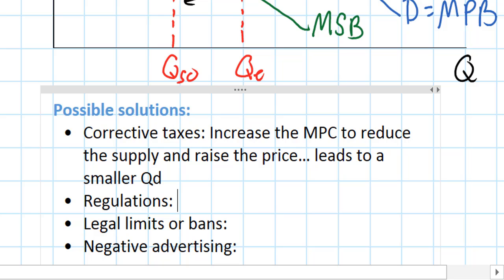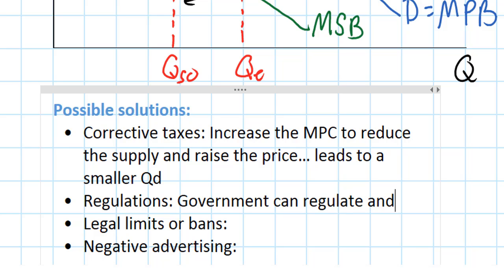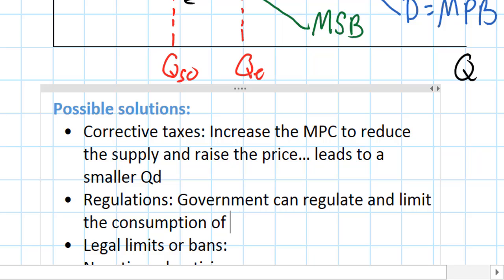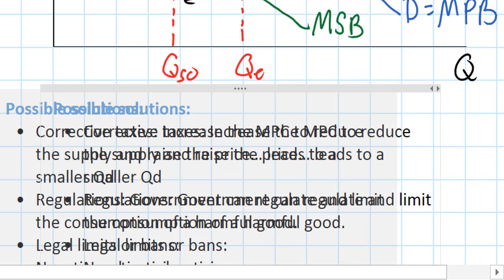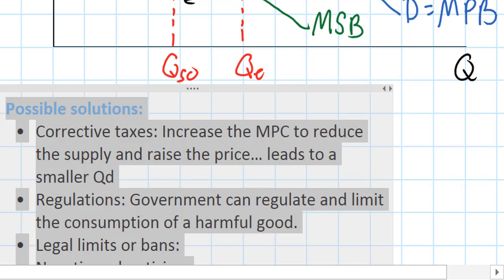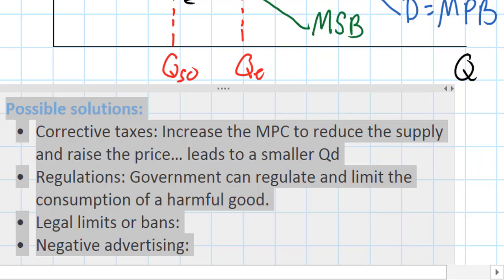Regulations may also be used. Government can regulate and limit the consumption of a harmful good. When we look at some examples of other goods that create negative externalities of consumption in just a minute, we can talk about how regulation can be used to limit the consumption or production of a good.